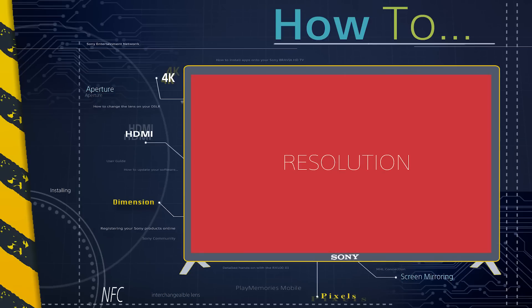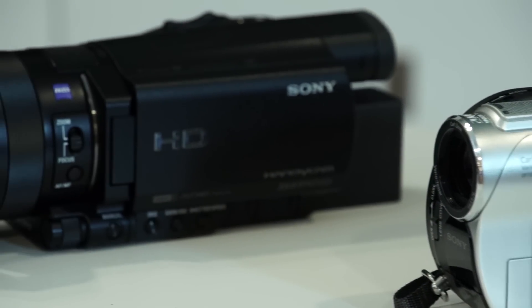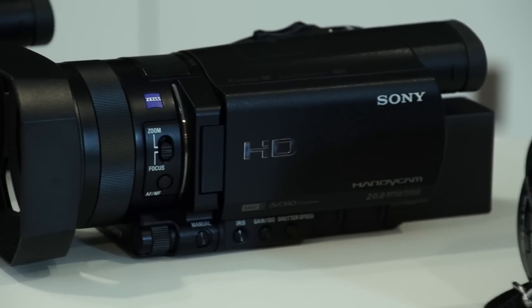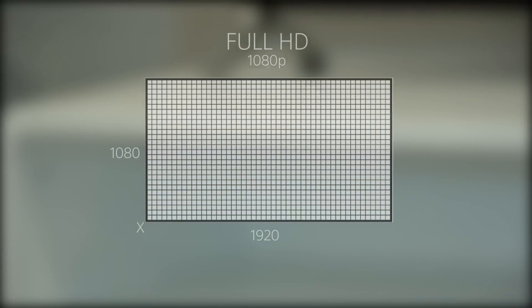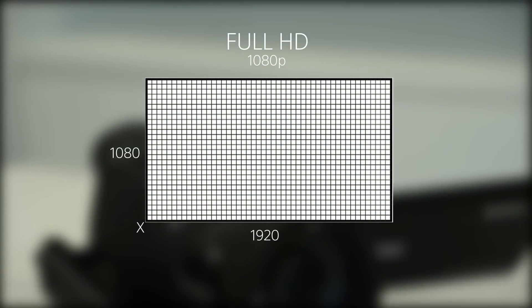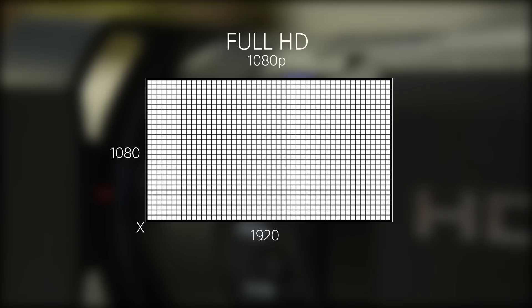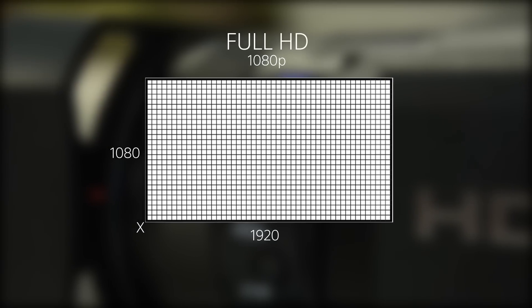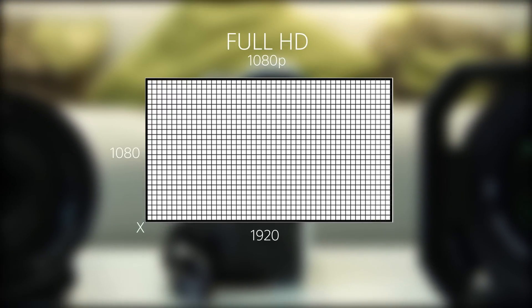Resolution is simply just another word for picture quality. The higher the resolution, the better the picture quality, and this can differ with each camcorder you use. The resolution of a camcorder is determined by the number of horizontal lines in an image — the more lines, the sharper the picture. Full HD resolution has 1080 horizontal lines, known as 1080p.